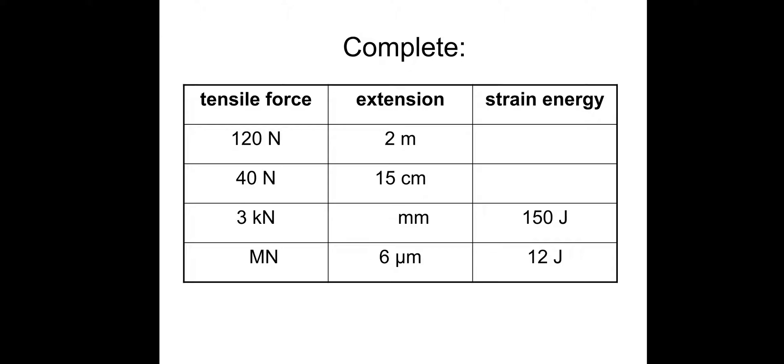So what I want you to do is to complete these questions. If you want to pause and have a go. And then I'll take you through the answers. So first one, 120 joules, half FE. Next one, be careful with the centimeters, so you get 3 joules. This third one, 100 millimeters. Remember the kilonewtons, 3000 newtons. And the last one, you've got micrometres, so 6 times 10 to the minus 6. And it wants an answer in meganewtons. So it would be 4 meganewtons.